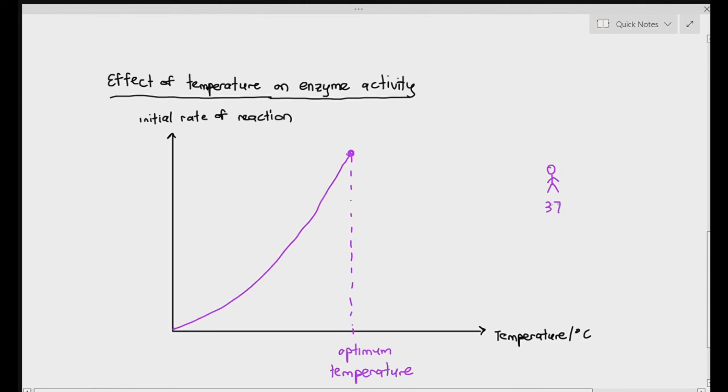Beyond the optimum temperature, the initial rate of reaction will steeply decrease. The graph is not symmetrical. Please be aware of this. As the temperature further increases beyond the optimum temperature, we will see that the enzyme shape, the 3D structure of the enzyme, becomes even worse and becomes even less complementary to the substrates.